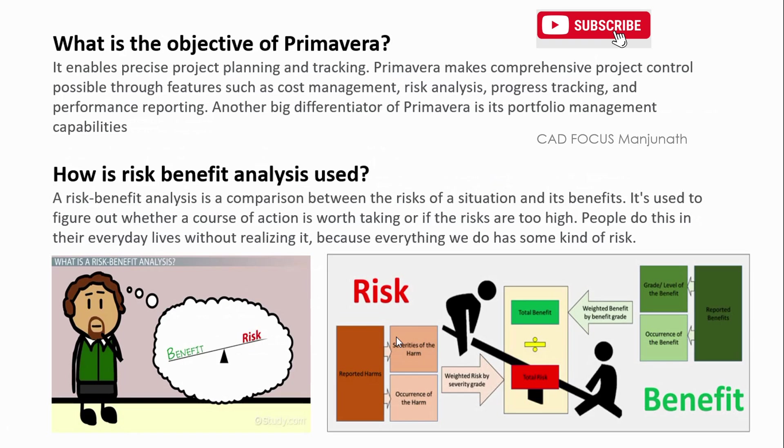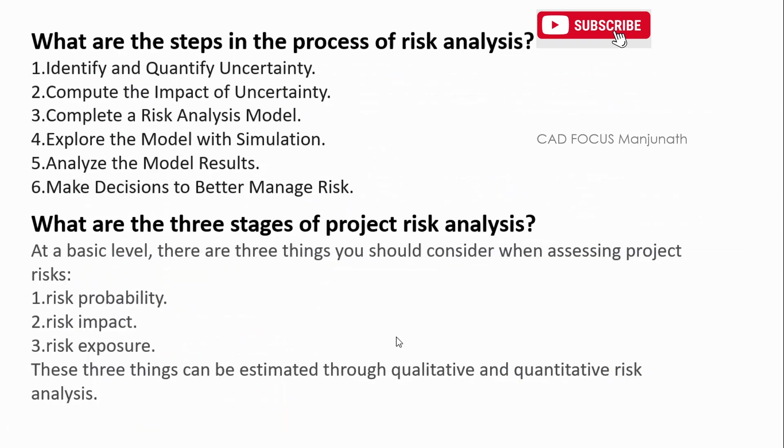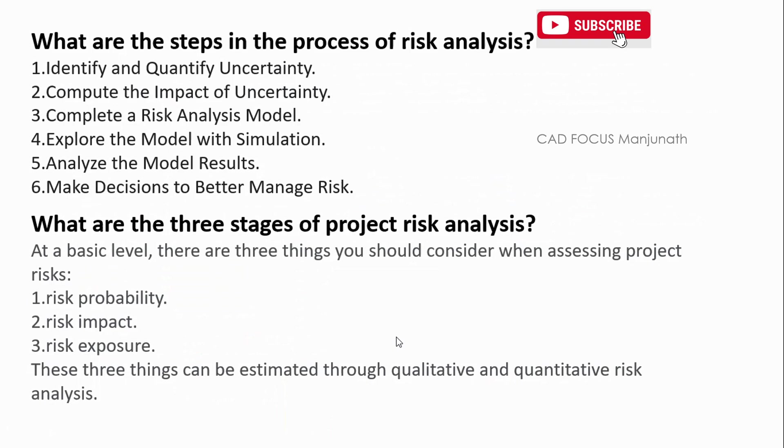The steps in the process of risk analysis are: identify and quantify uncertainty, compute the impact of uncertainty, complete a risk analysis model, explore the model with simulations or iterations of thousands, analyze the model results, and make decisions to better manage risk. There are three stages of project risk analysis: risk probability, risk impact, and risk exposure.